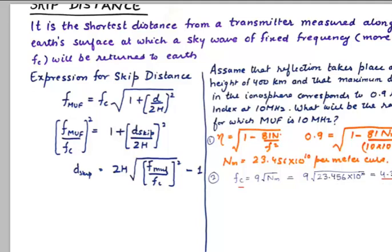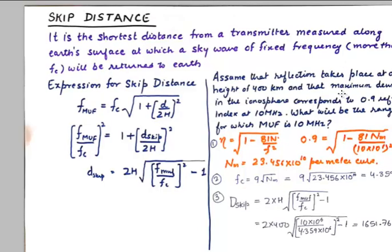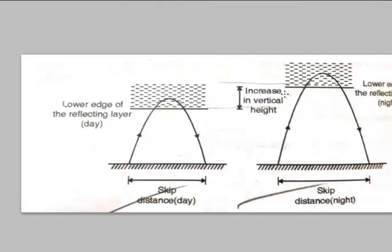And then skip distance can be easily found using the formula that we have just derived. Here it is: 2 into 400, FMUF is given 10 megahertz, FC is calculated in the previous step, and that turns out to be 1651 kilometers approximately. And now we need to talk about another term which is known as optimum working frequency.